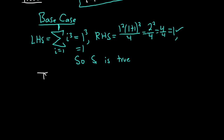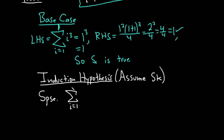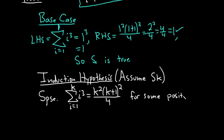The next step is called the induction hypothesis, abbreviated IH. This is where you assume your statement is true for some k — you assume S sub k is true. Suppose that our statement is true when n is equal to k for some k: the sum as i runs from 1 to k of i cubed is equal to k squared times k plus 1 squared over 4 for some positive integer k.